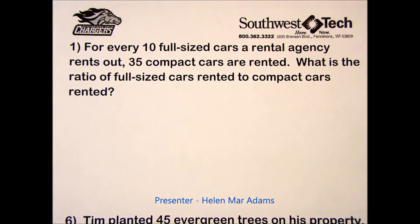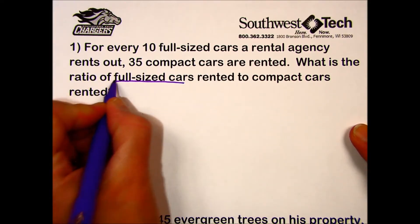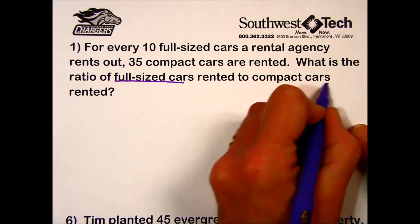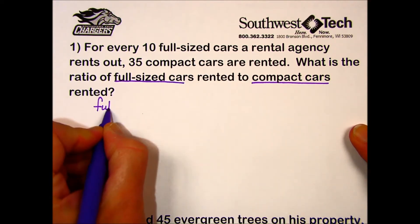Practice set four asks us to write a ratio for each situation. In number one, for every 10 full-size cars a rental agency rents out, 35 compact cars are rented. What is the ratio of full-size cars rented to compact cars rented? The ratio they're asking us is full-size to compact cars, so we'll make note of that.